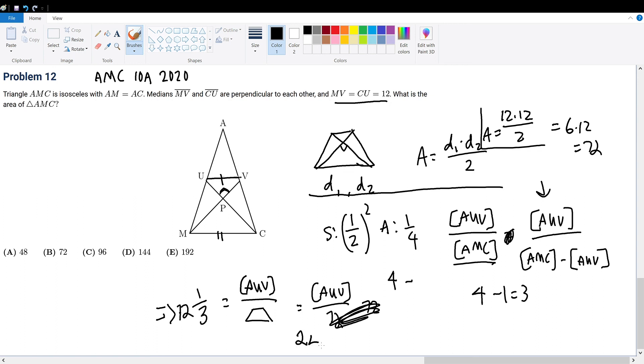So 1 to 3 equals 24 over 72. This tells us 72 is the area of the trapezoid and 24 is the area of AUV. So 24 plus 72 gives us the entire area of AMC, which equals 96. Answer choice C has 96, so that's our answer.